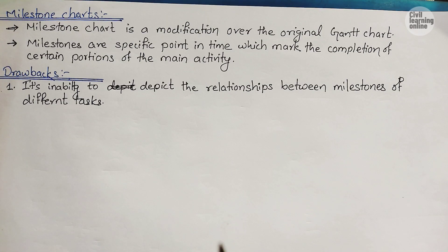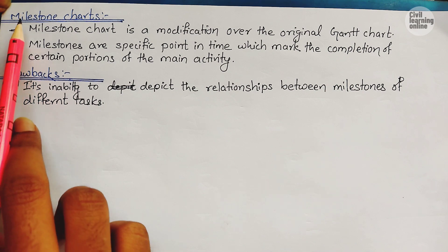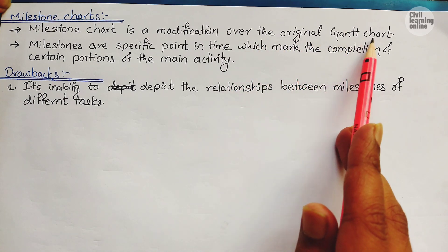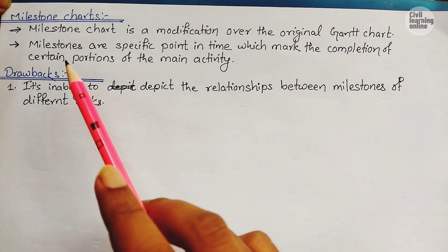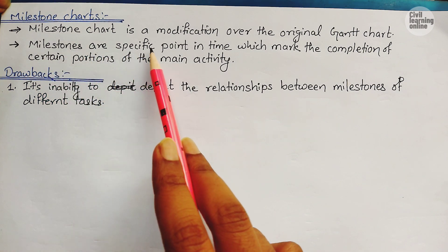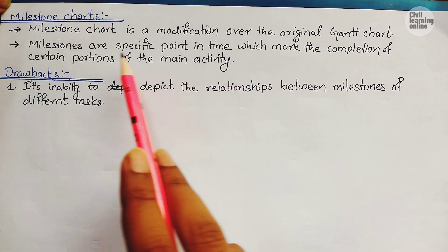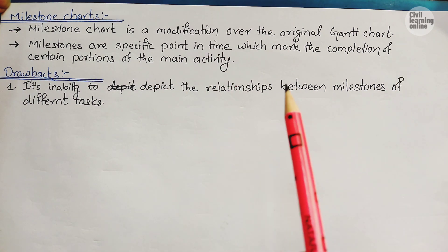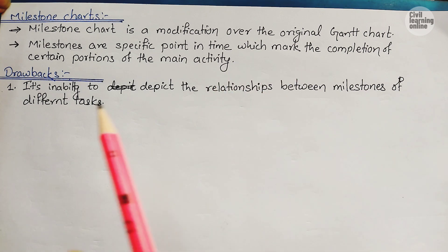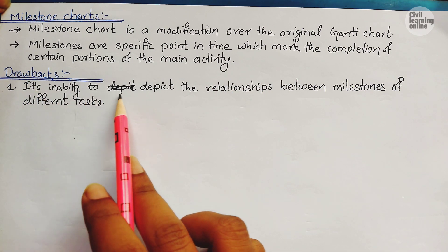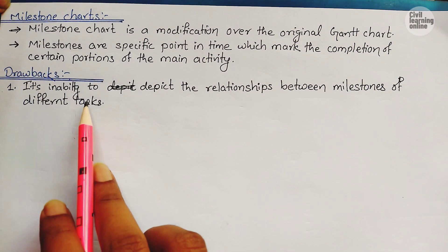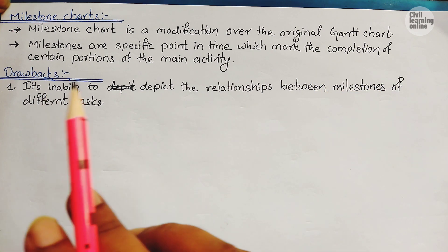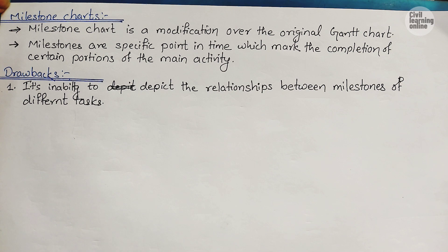To address the drawbacks of bar chart, a new chart came into action — the milestone chart. It is a modification over the original Gantt chart. Milestones are specific points in time which mark the completion of a certain portion of the main activity. The drawback of milestone chart is its inability to depict the relationship between milestones of different tasks.